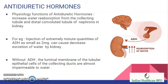Antidiuretic hormone: the physiological function of antidiuretic hormone is to increase water reabsorption from the collecting tubule and distal tubule of nephrons in the kidney. For example, injection of an extremely minute quantity of ADH — antidiuretic hormone — as small as 2 nanograms can cause decreased excretion of water by the kidney. Without ADH, the luminal membrane of the tubular epithelial cells of the collecting duct is almost impermeable to water.